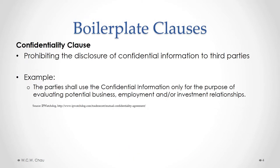Many contracts include a confidentiality clause, and such a clause would prohibit the disclosure of confidential information to a third party. Here's an example of a clause which says that the parties to the contract can use the confidential information only for the purpose of the contract, which is to evaluate a business, employment, or investment relationship.